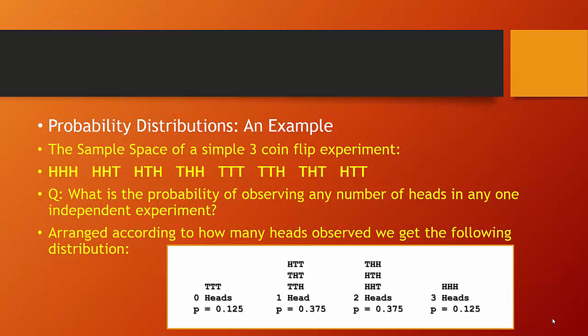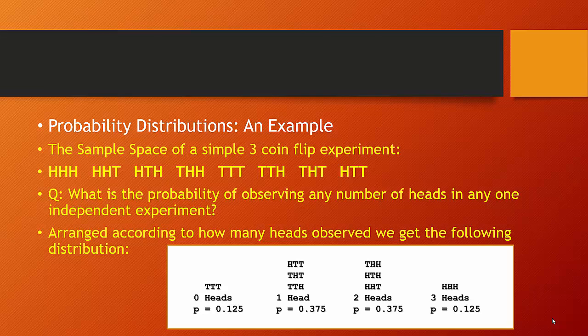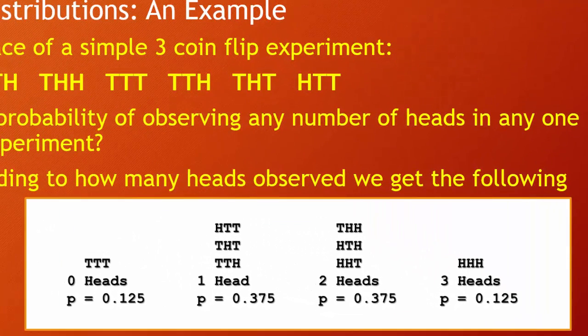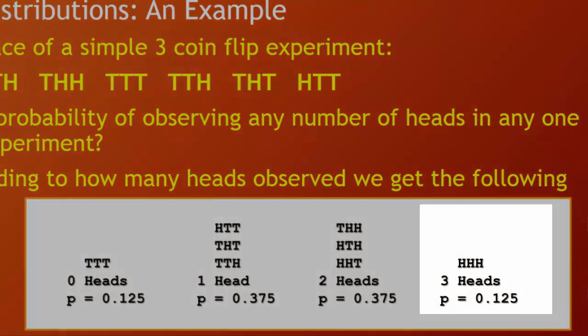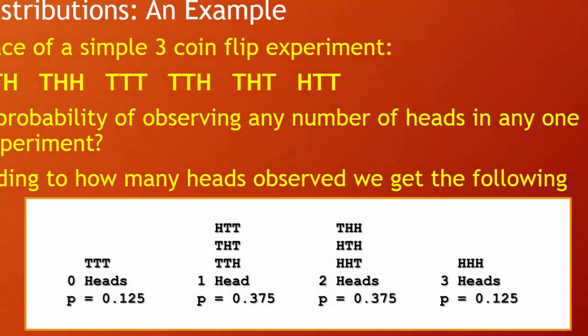So let's think about an experiment where we flip three coins in a row and imagine all the possible outcomes of this space. What's the probability of observing any possible outcome? What's the probability of getting one head, two heads, or three heads when we run this experiment? You can imagine that there's only one possible outcome that gets you three tails or three heads — you would have to get them sequentially.